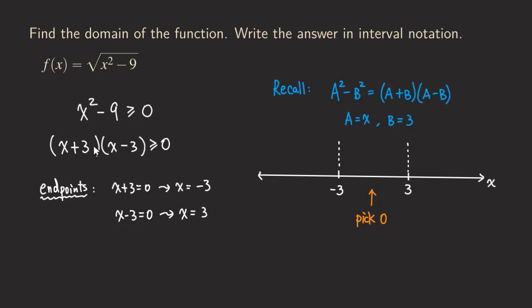So if you pick zero and then you plug it back in here, depending on the situation, sometimes this one is easier, sometimes the factor form is easier. It's up to you. As long as it's the original inequality, then it will be okay.